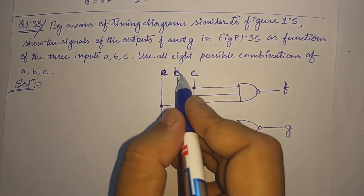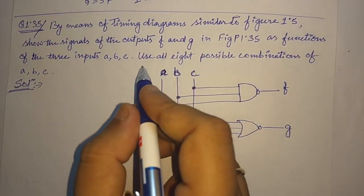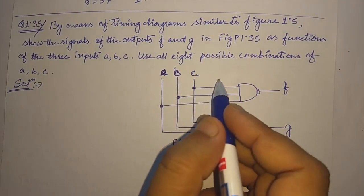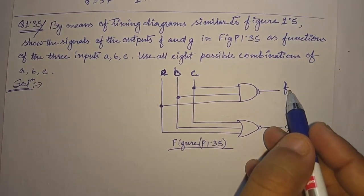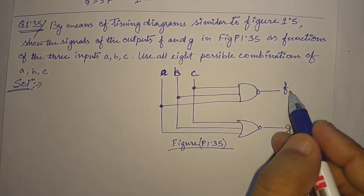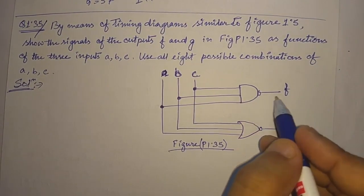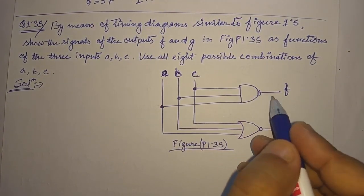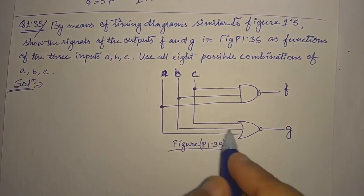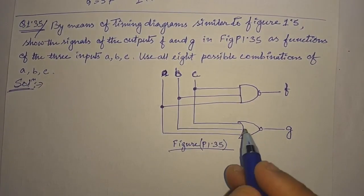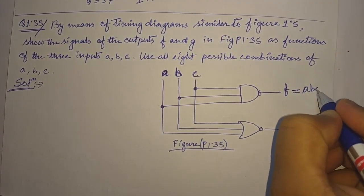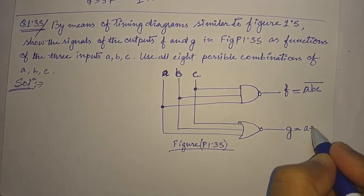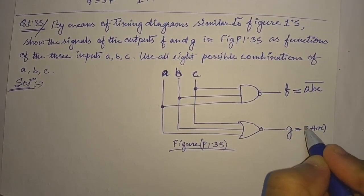We have three inputs: a, b, and c. We have to use all eight combinations of a, b, and c, and represent their outputs f and g. Here, f output is a·b·c whole bar (NAND gate), and g is a+b+c whole bar (NOR gate).